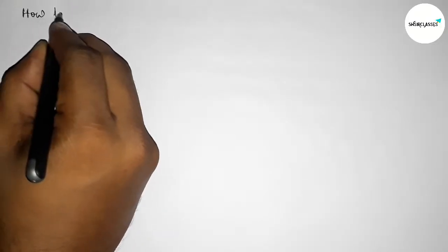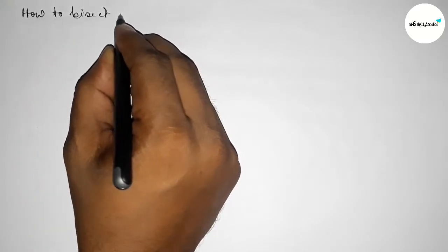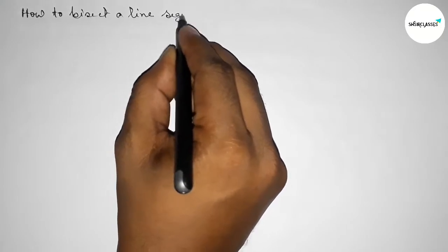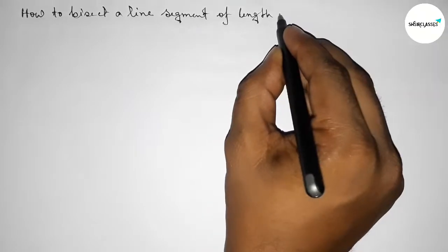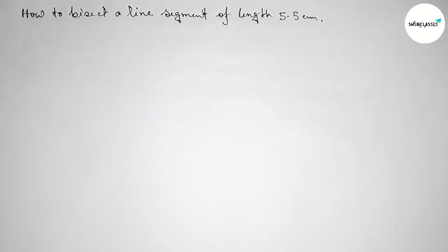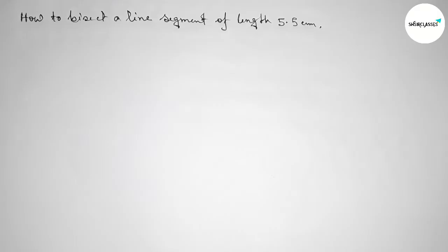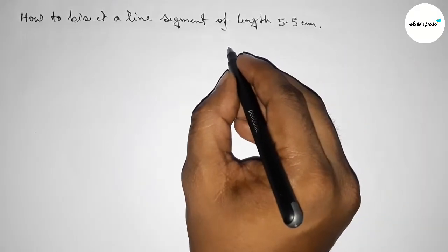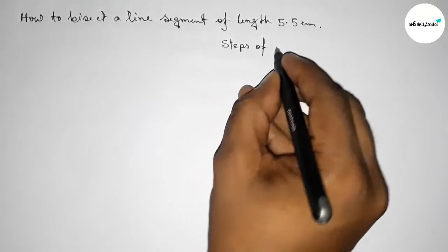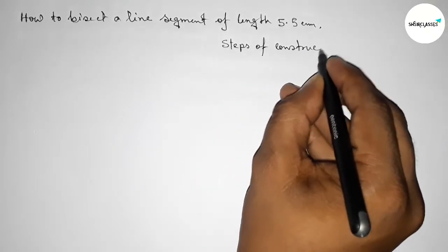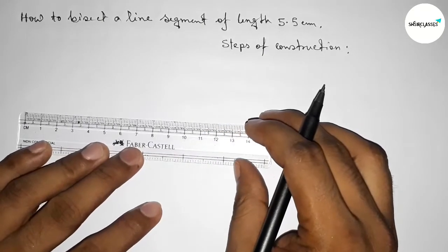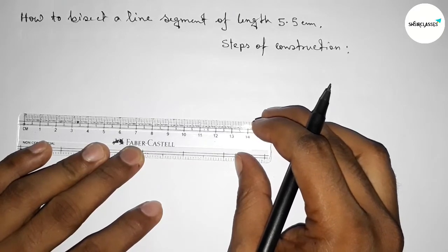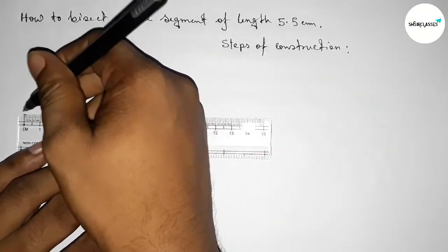Hi everyone, welcome to Essay Share Classes. Today we're discussing how to bisect a line segment of length 5.5 centimeters using a compass. Let's start the video. First, leaving some space here to write down the steps of construction. Now we have to draw a line of length 5.5 centimeters.